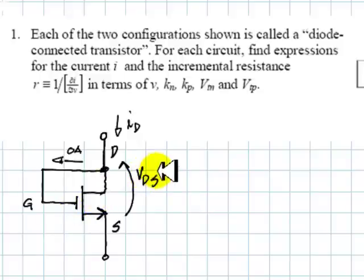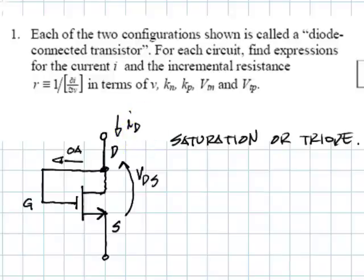What about cutoff? No, it's not in cutoff because the current ID is not zero. We have only two options. It is in saturation or it is in triode mode of operation.